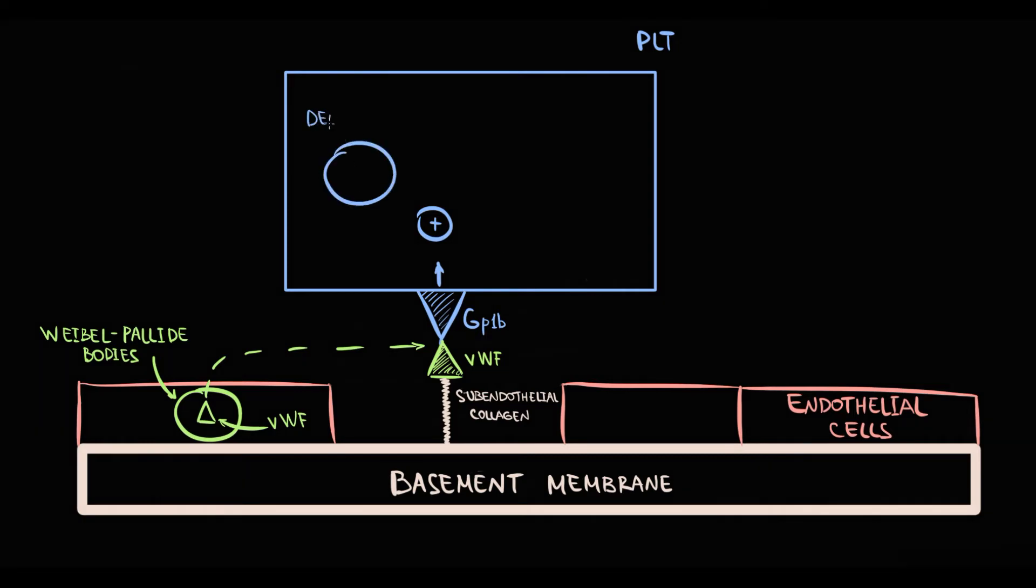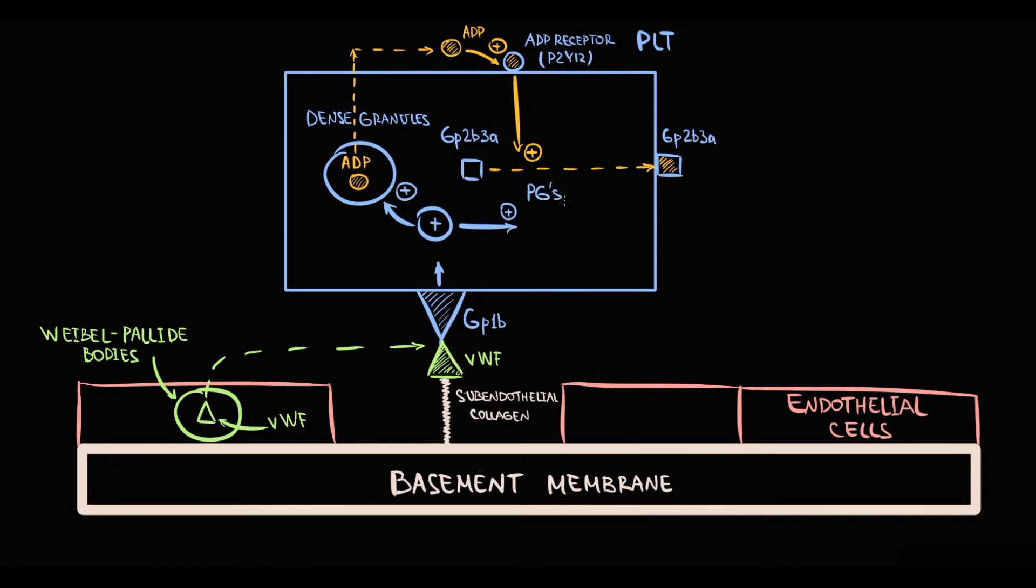With degranulation, platelets release the content inside them, including the dense granules that contain ADP. ADP that is released into the blood acts on ADP receptor on platelets and activates them. Activation of ADP receptor forces platelets to transport GP2B3A receptor to the surface, where GP2B3A serves as binding site for fibrinogen. In addition to this, platelets from prostaglandins by COX enzyme begin to produce thromboxane A2.